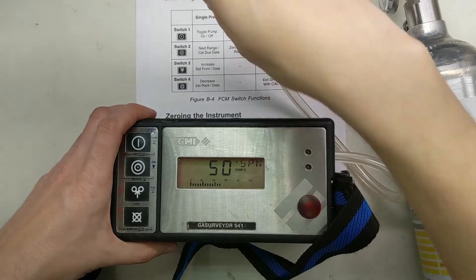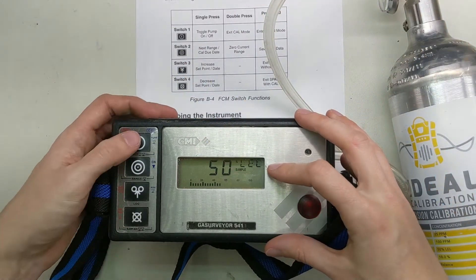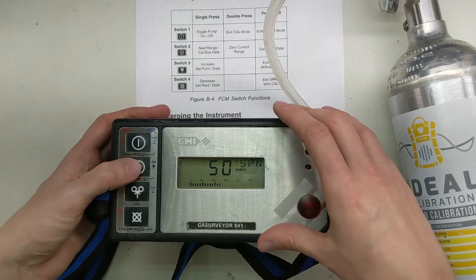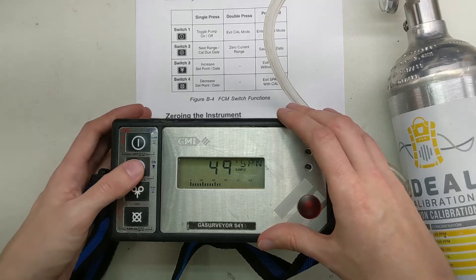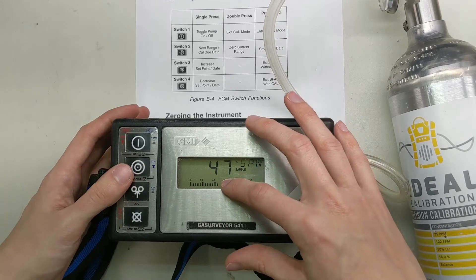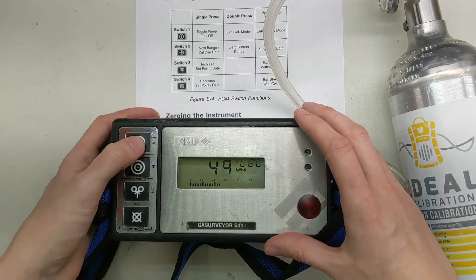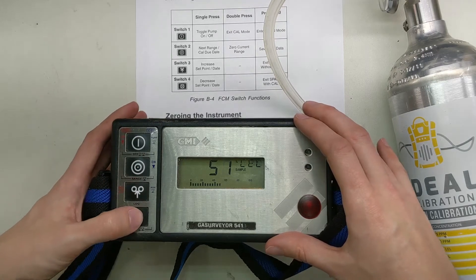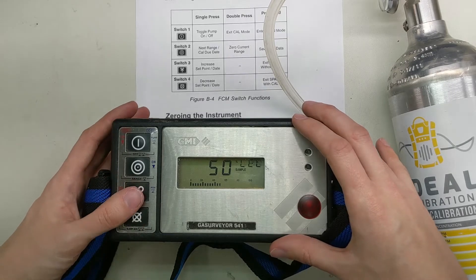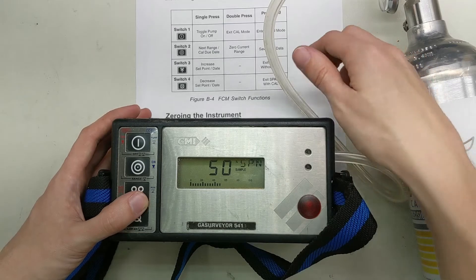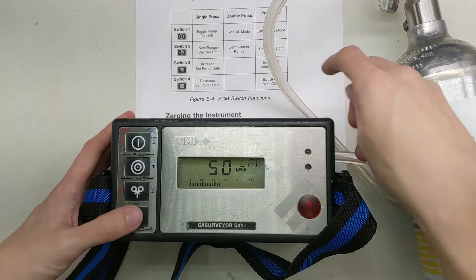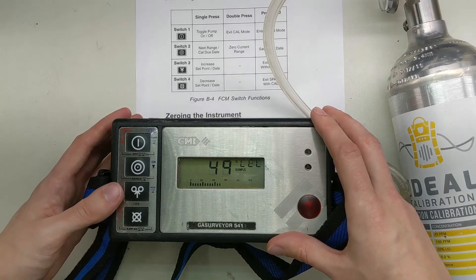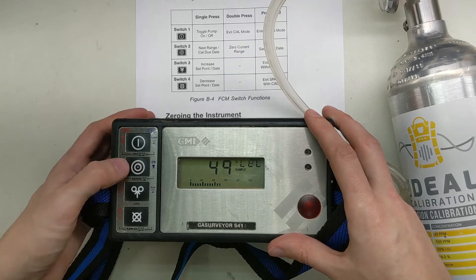We've got our gas on here and we're in span mode for the LEL sensor right now. These buttons up and down will take what it expects up and down. So if you have a different cal gas blend, you can use that here. What we're going to do is exit span with Cal. We're going to press and hold the switch forward. Good deal. Now we're going to move to the next one.